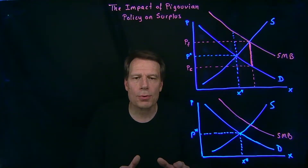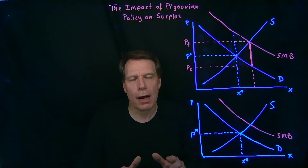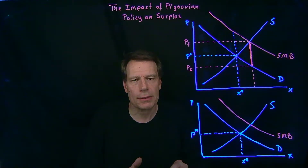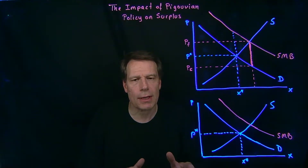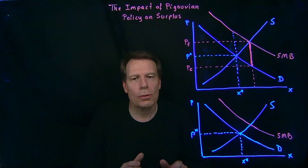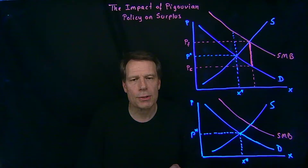We've seen that markets produce too much relative to the socially optimal quantity in the presence of negative externalities, and too little in the presence of positive externalities. We've argued that you can use Pigouvian taxes or subsidies to cause markets to produce the socially optimal quantity and thereby eliminate the deadweight losses from externalities.